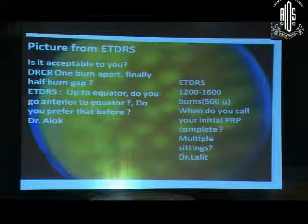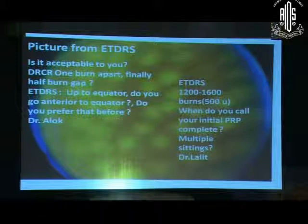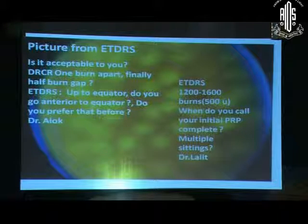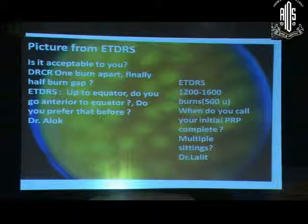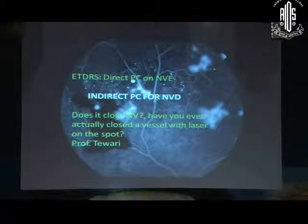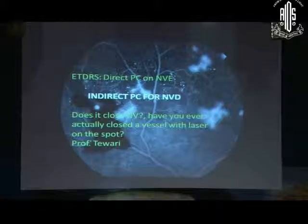ETDRS said that 1200 to 1600 burns of this size is complete PRP. You use a burn size of 200 microns — when do you call your PRP complete after how many burns? I generally give PRP in three sittings and on average put around 700 to 800 spots per sitting, so that means around 2500 spots is a complete PRP on average.